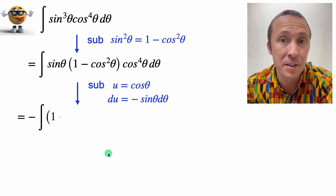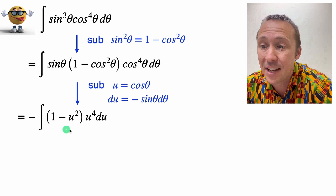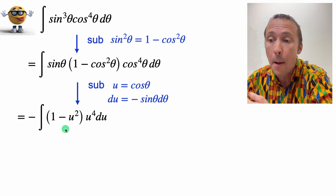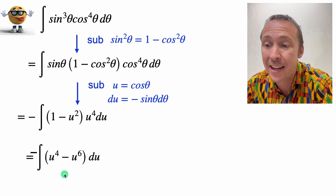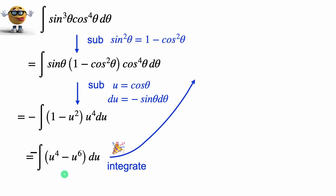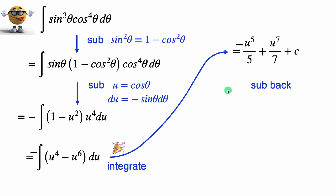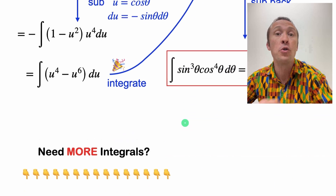So we'll substitute that in, and that gives us everything in terms of kind of polynomials here. We'll expand the brackets, and at this point we can party with the reverse power rule. To finish off our integral, we'll substitute back, and we have our integral in all its glory. There it is.